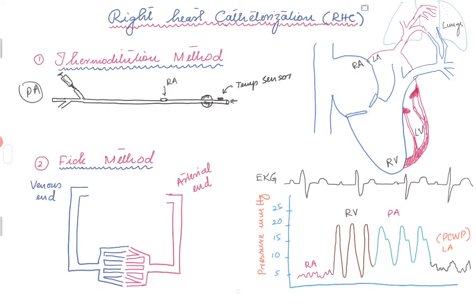We're going to start with a right heart catheterization through the right IJ — it's a straight shot. The catheter comes through the SVC and into the right atrium. You have the balloon fitted near the tip, which allows the catheter to travel along with blood flow. Once the catheter is in the right atrium, you will see the right atrial waveform, and the pressures can be somewhere between 0 to 5 mmHg.